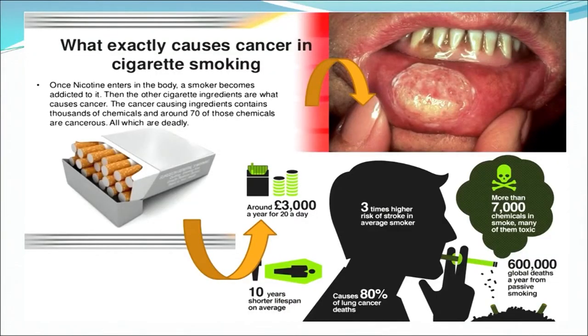Once nicotine enters the body, a smoker becomes addicted to it. The other cigarette ingredients are what cause cancer. The cancer-causing ingredients contain thousands of chemicals, and around 70 of those chemicals are cancerous — all of which are deadly. Tobacco contains a powerful substance called nicotine, which takes less than 20 seconds to reach the brain from inhaled cigarette smoke. The main way that smoking causes cancer is by damaging our DNA, including key genes that protect us against cancer.